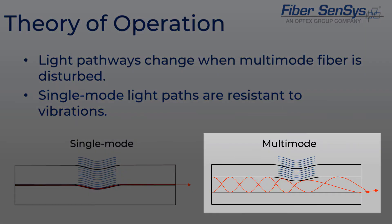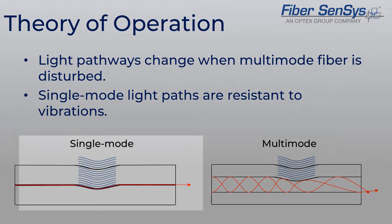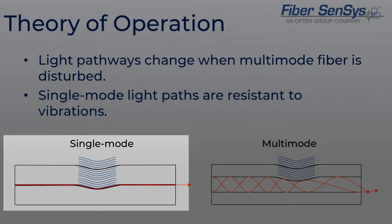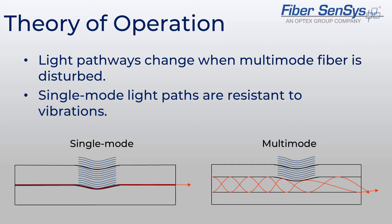When multi-mode fiber is subject to vibrations caused by disturbances, the light pathways inside the core will change, thereby creating a detectable signal. Single mode, on the other hand, is resistant to such disturbances because it allows just one pathway for light to travel. All optical-based FiberSensys systems use these unique features to detect intruders. For most systems, single mode fiber is used as a lead-in to send and retrieve light from the APU, while all systems use multi-mode fiber for the sensing zone.